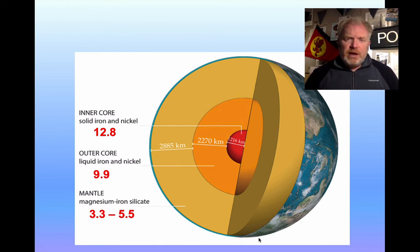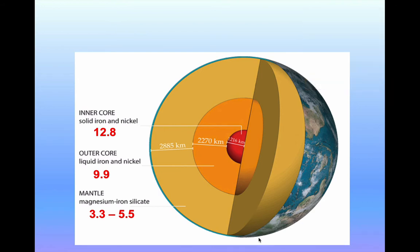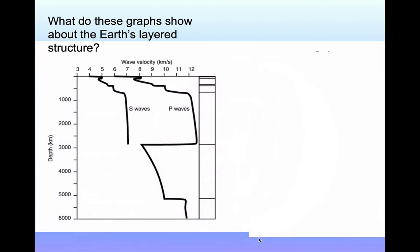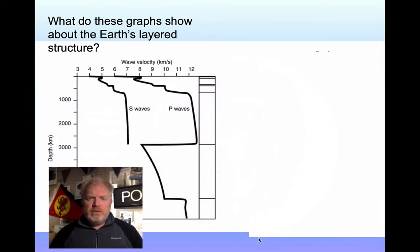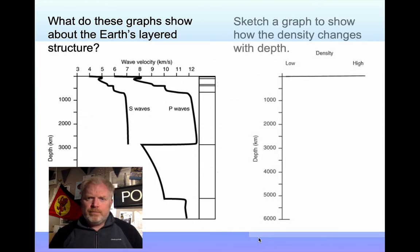Those are the densities. If we now look at the velocity of earthquake waves, we can actually then start to work out more things about the Earth's layered structure. What I'd like you to do is just to sketch a graph here to show how that density changes with depth. Think about the figures we've done. Notice there are no figures, no values for density there. We can just go from low to high. And you've got the depth of measurement there. Have a go at that now.